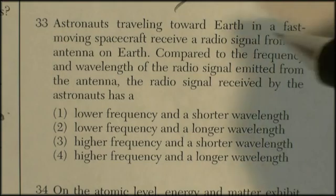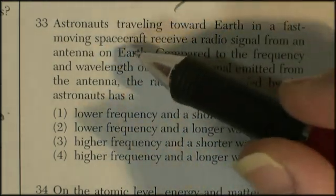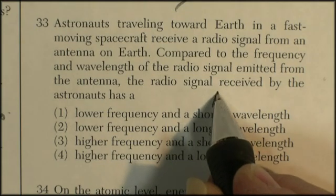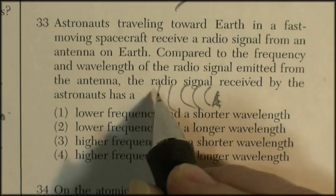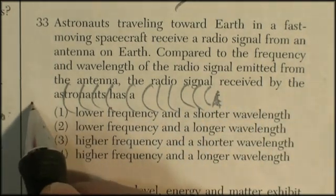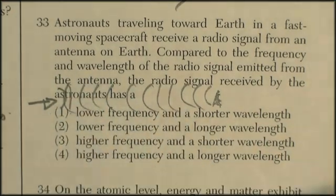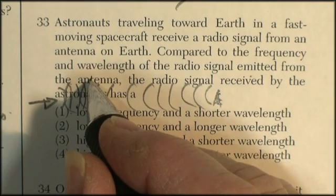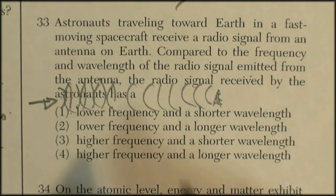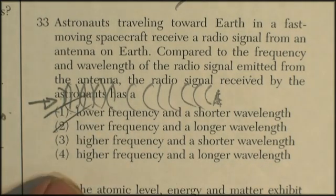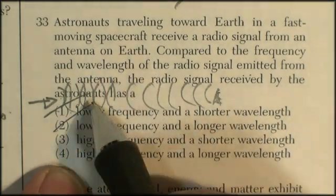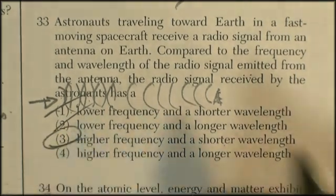Astronauts traveling towards Earth in a fast-moving spacecraft receive a radio signal from an antenna on Earth. Compared to the frequency and wavelength of the radio signal emitted from the antenna, what does the astronaut receive? Because he's moving towards it, he's actually going to encounter more waves per second than are being transmitted. If he was just parked, he'd hear the same frequency, but because he's moving towards it, he gets more of those waves per second. So it's going to be a higher frequency. Higher frequency means shorter wavelength - they're going to have to be closer together. This is known as the Doppler effect.